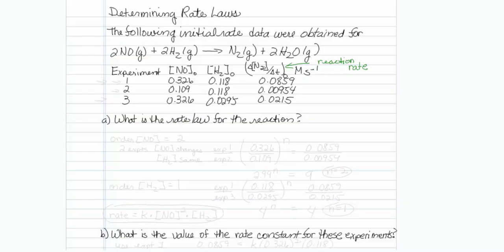Here's how we go about doing this. In order to get the order of NO, we want to find two experiments where NO changes and H2 is the same. So I think that probably represents experiments 1 and 2. So what I'm going to do is compare experiment 1 and experiment 2.